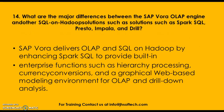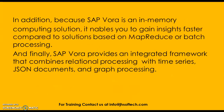What are the major differences between the SAP Vora engine and other SQL-on-Hadoop solutions such as Spark SQL, Presto, Impala, and Trill? SAP Vora delivers OLAP and SQL on Hadoop by enhancing Spark SQL to provide built-in enterprise solutions such as hierarchy processing, currency conversions, and a graphical web-based modeling environment for OLAP and drill-down analysis. Because SAP Vora is an in-memory computing solution, it enables faster insights compared to solutions based on MapReduce or batch processing. Finally, SAP Vora provides an integrated framework combining relational processing with time series, JSON documents, and graph processing.